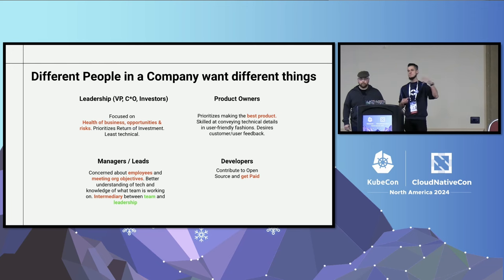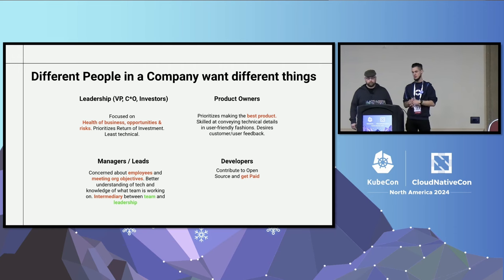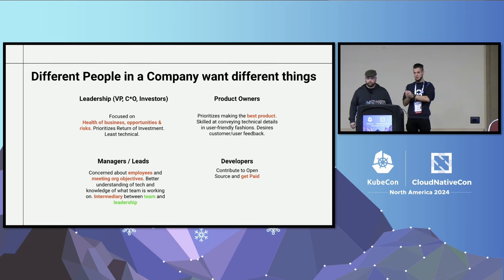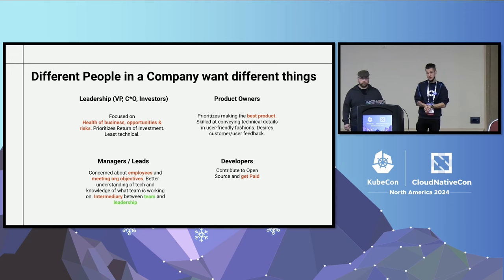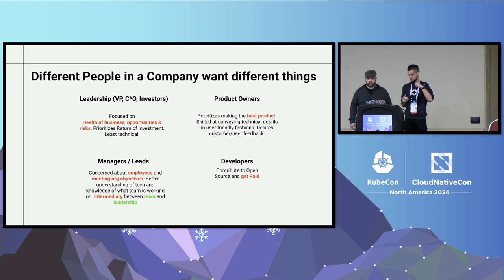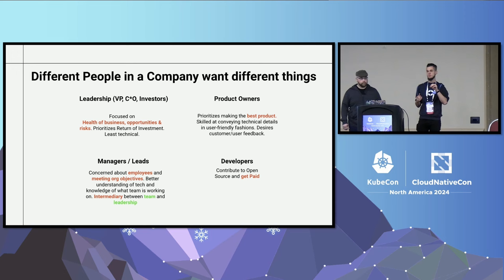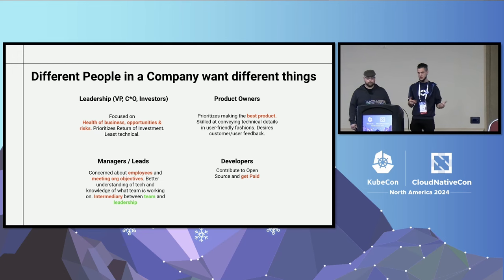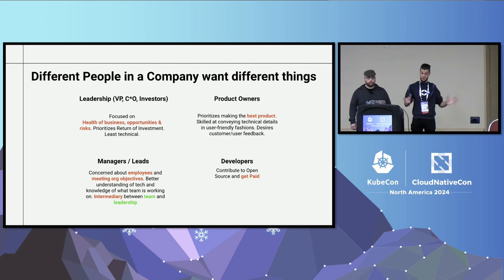However, this doesn't match with what the leadership team wants. The leadership team is there to create a business, to make sure the company runs healthy and growing, with as little risk as possible. And this is probably the most important part: if you want to have open source done by your company, you need to convince the leadership team that it counts toward their goals.